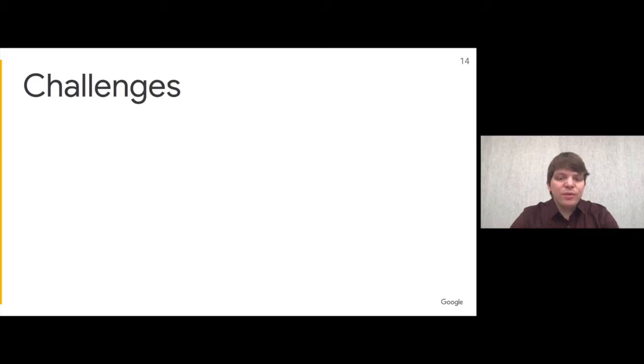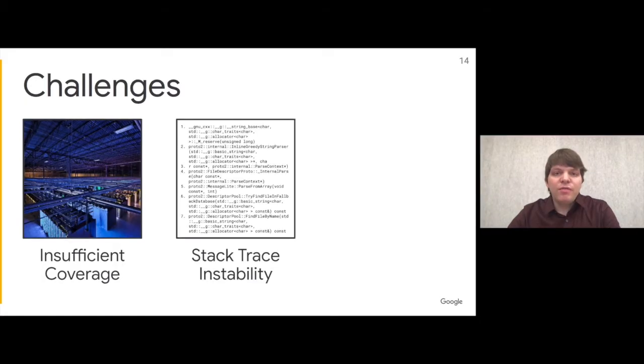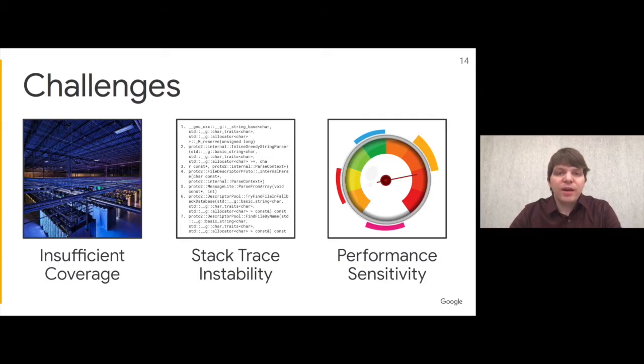There are three challenges to make this work. First, to predict every possible stack trace, you need to observe all application behavior, meaning you must observe the application in production. Recording every allocation in production can add 10% to 20% of overhead. Even with a full set of stack traces, it wouldn't be stable because applications change over time. Finally, memory allocators need to make decisions within tens of nanoseconds.